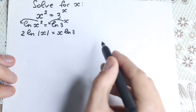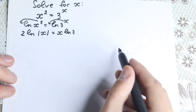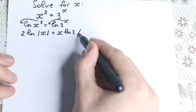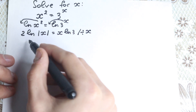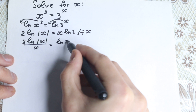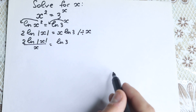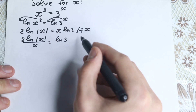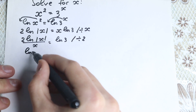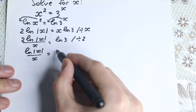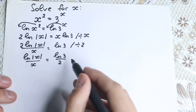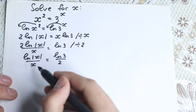So we have: 2 times natural log of |x| equals x times natural log 3. Now let's divide both sides by x, because we want to regroup our x's on the left and the constant on the right. So we have: 2 times natural log |x| over x equals natural log 3. Then divide both sides by 2: natural log |x| over x equals natural log 3 over 2. I hope you understand this step — we just bring the constant to the right-hand side and this element to the left.